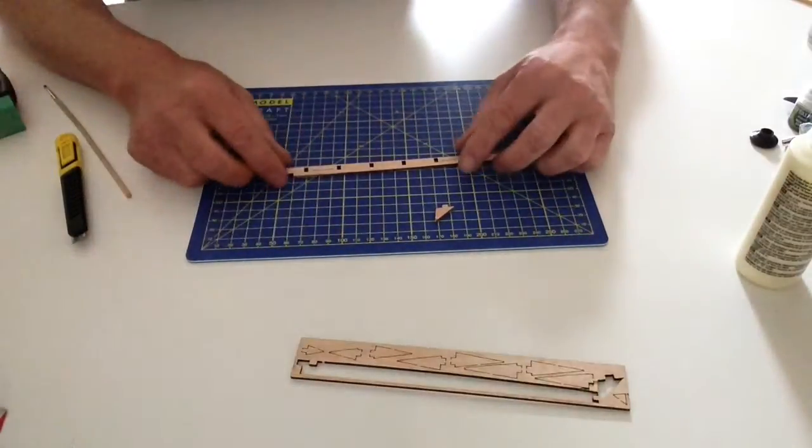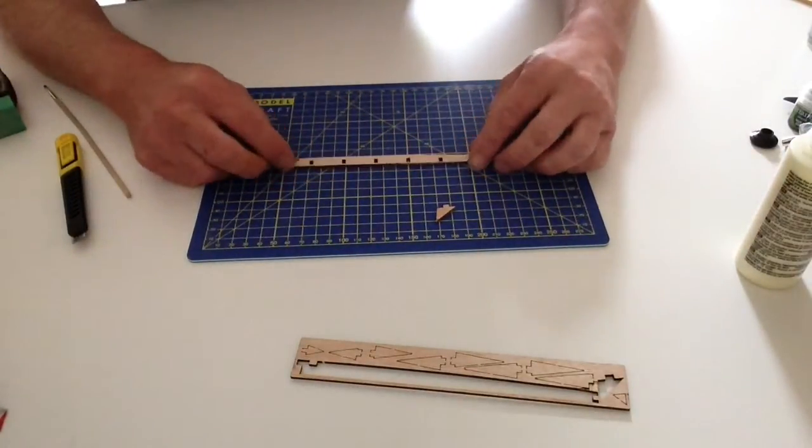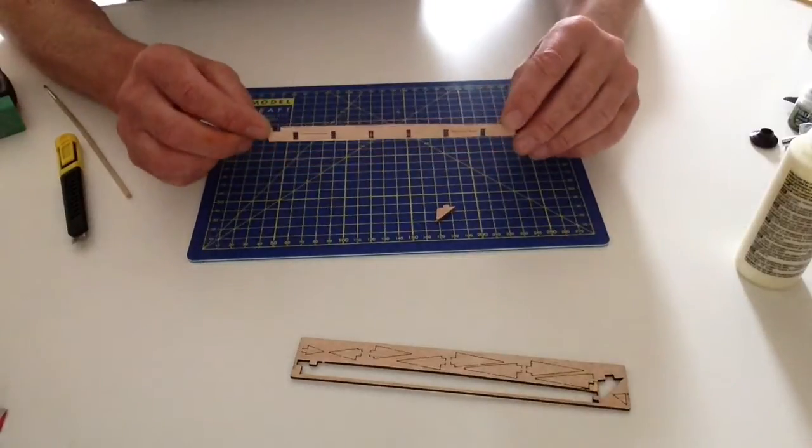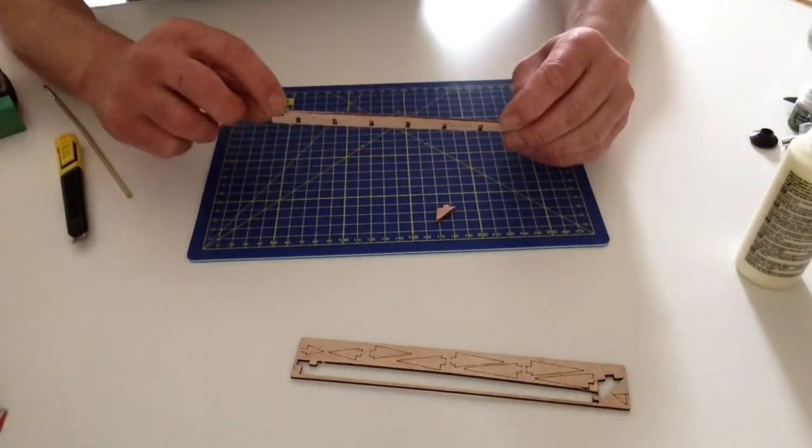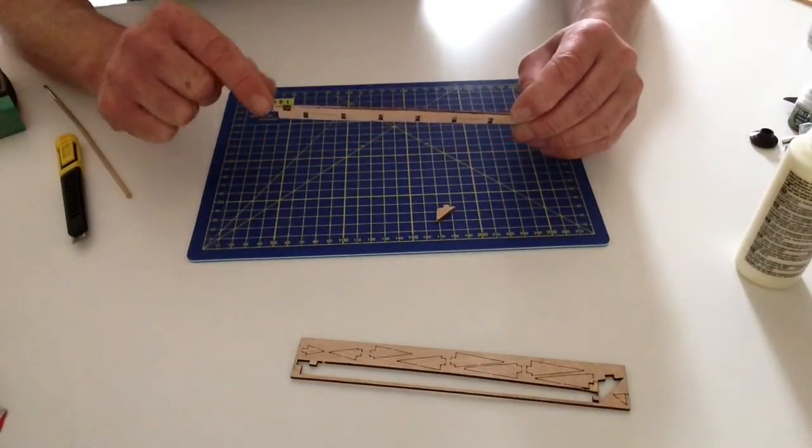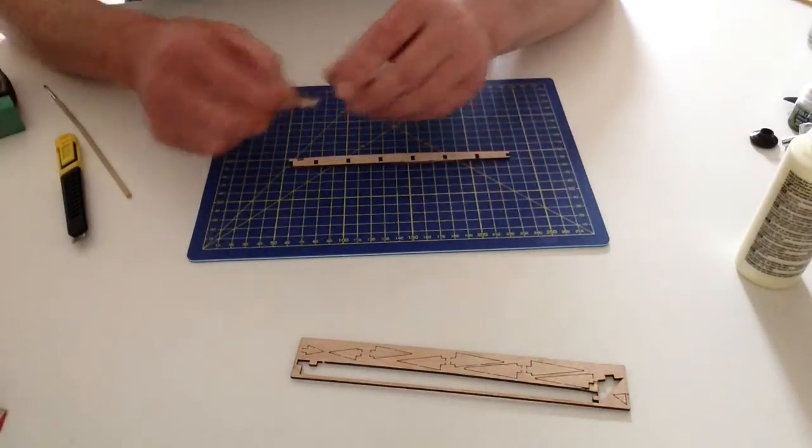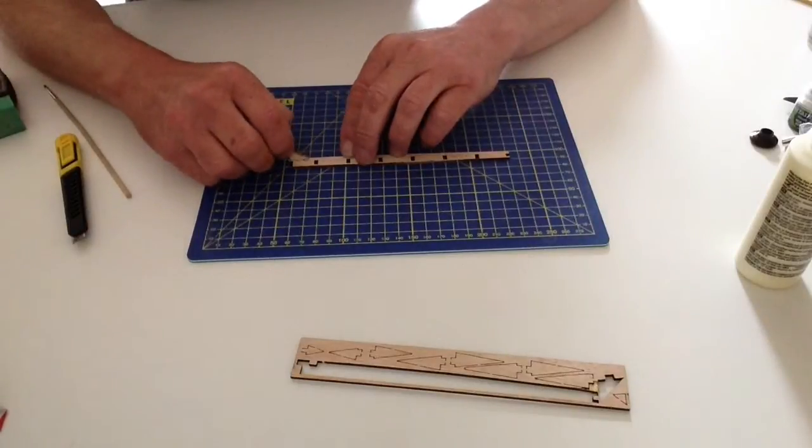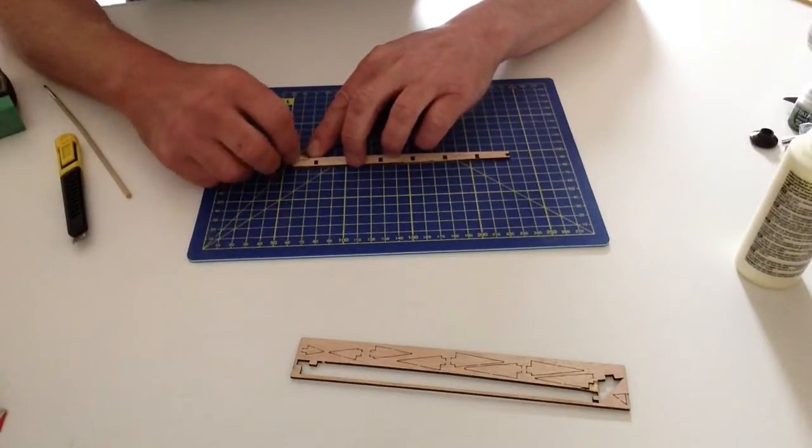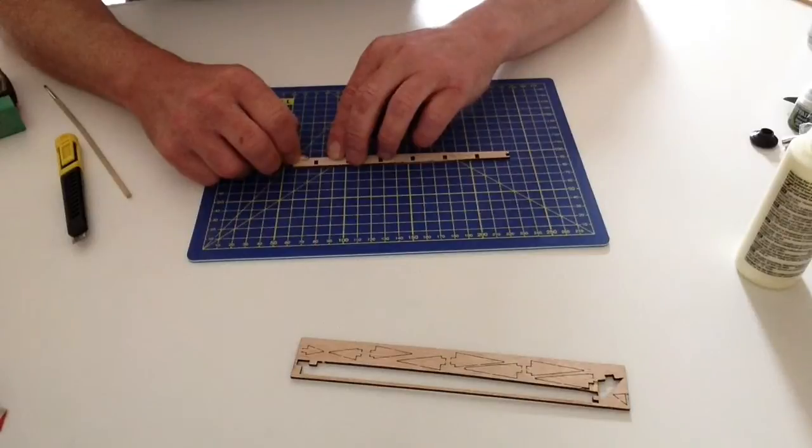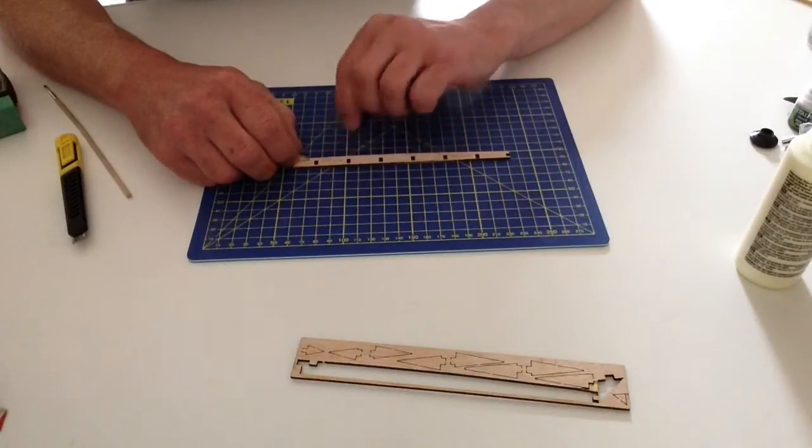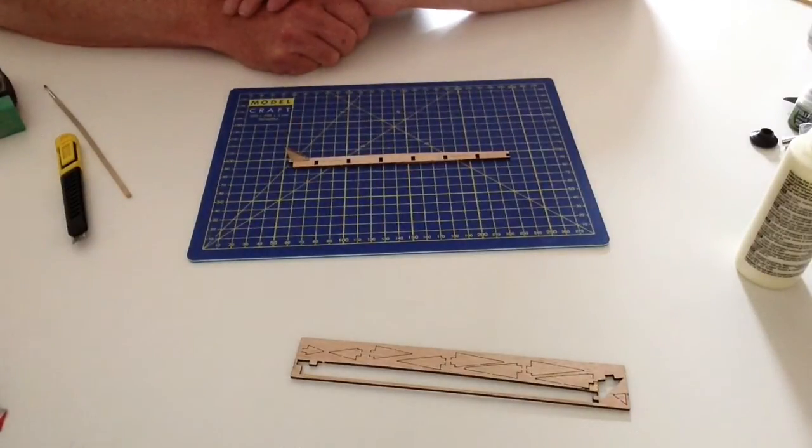Notice the orientation with this little notch and this bit sticking out here. Then what we're going to do is take the section that we've just removed and we're going to be gluing that into position like so.